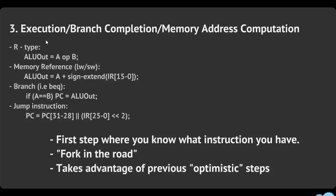The main four types are R-type, memory reference, branch, and jump. If you have an R-type, all you want to do is execute it: it's A operation B — so A plus B or A minus B — and then you store that result into ALU out.